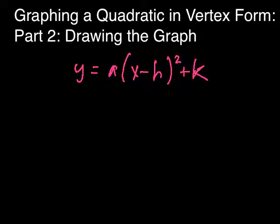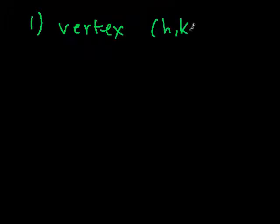And now, I'm going to show you a simple five-step way to drawing the graph for this equation. Step one, the easy part. You already know how to do this. All you have to do is identify the vertex, which should be in the form h comma k.